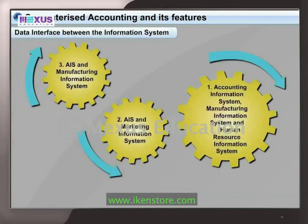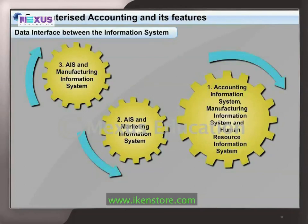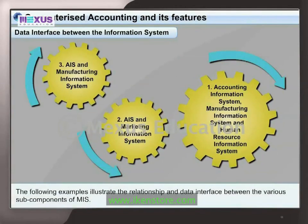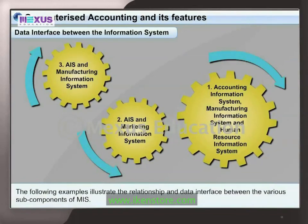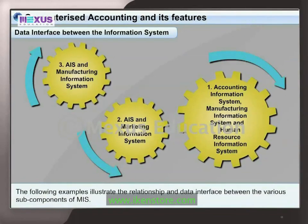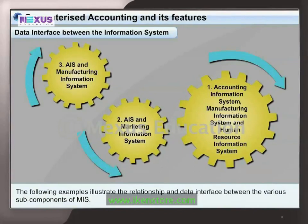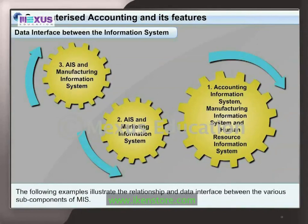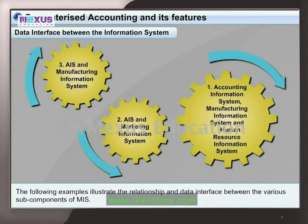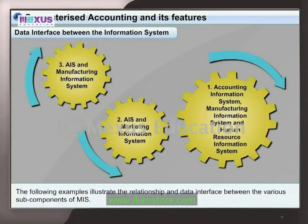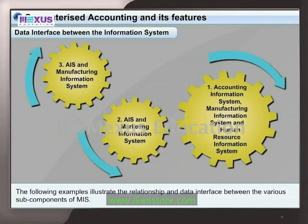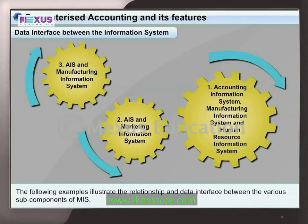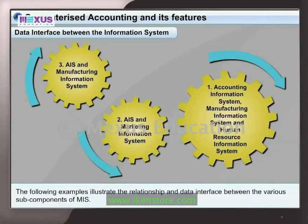The following examples illustrate the relationship and data interface between the various subcomponents of MIS: 1) Accounting Information System with Manufacturing Information System and Human Resource Information System, 2) AIS and Marketing Information System, and 3) AIS and Manufacturing Information System.